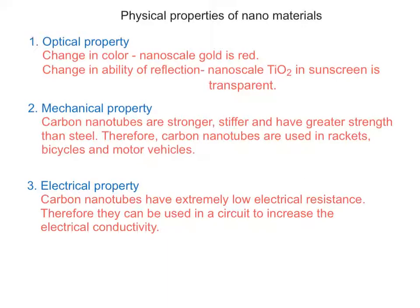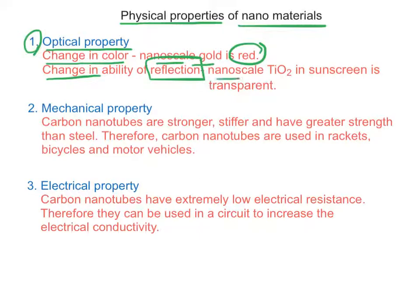The physical properties of nanomaterials: first is optical properties. Change in color - nanoscale gold is red. Change in the ability of reflection - in nanoscale, nanoscale titanium oxide is used in sunscreen which is transparent.